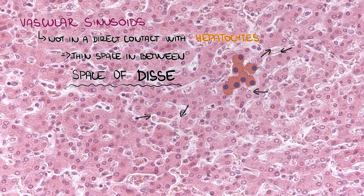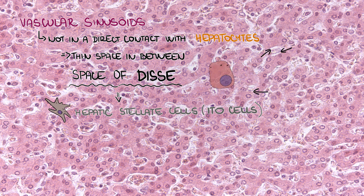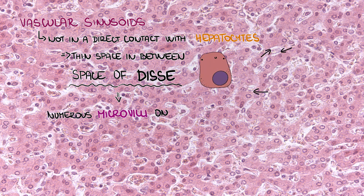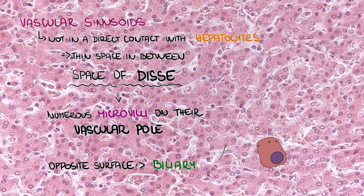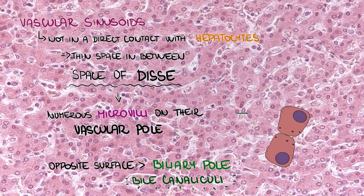There is a thin space in between called the space of Disse. It contains hepatic stellate cells, so-called Ito cells, and hepatocytes protrude into this space by numerous microvilli on their vascular pole. The opposite surface of hepatocytes is called the biliary pole. There are bile canaliculi between two biliary poles of adjacent hepatocytes.